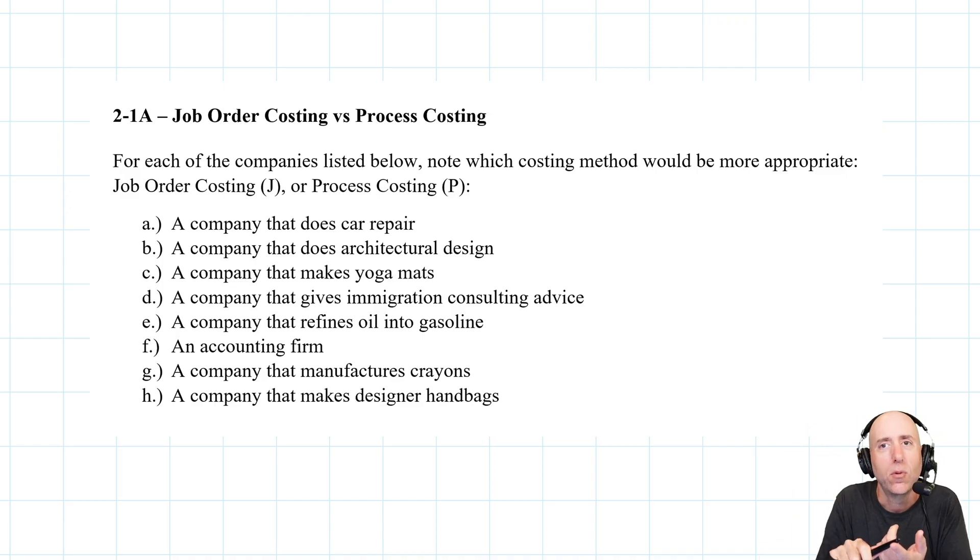They can just go, 'We made a million packages, we spent a million dollars, therefore our cost is a dollar per package.' Process costing is way more efficient, but it just doesn't work for a lot of types of companies.